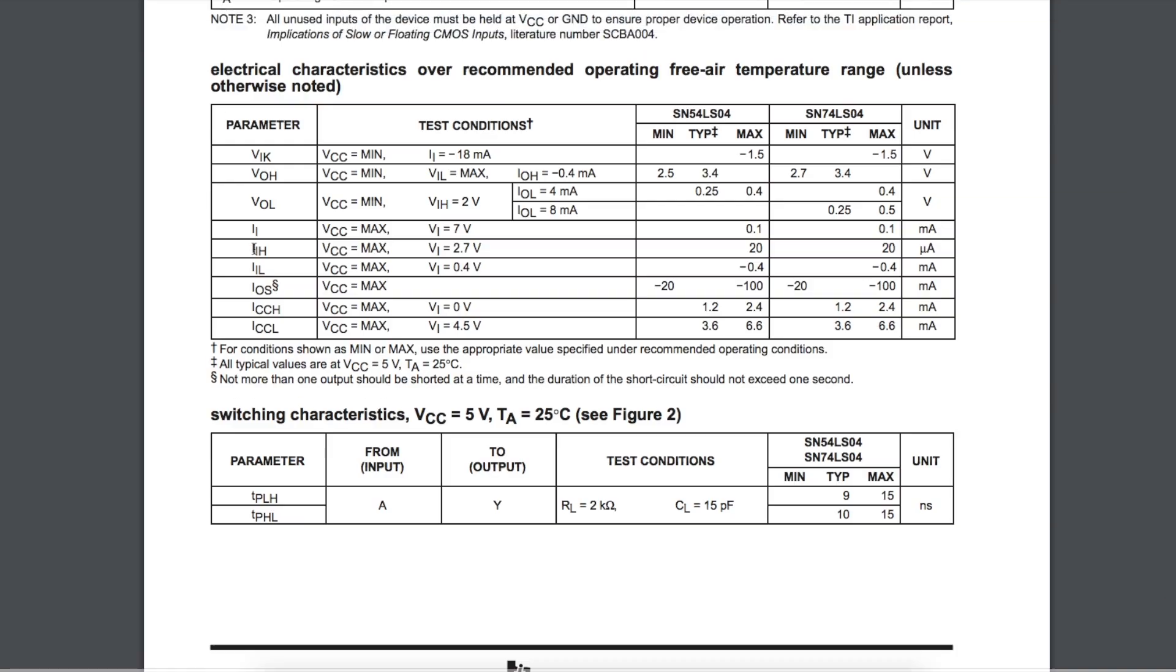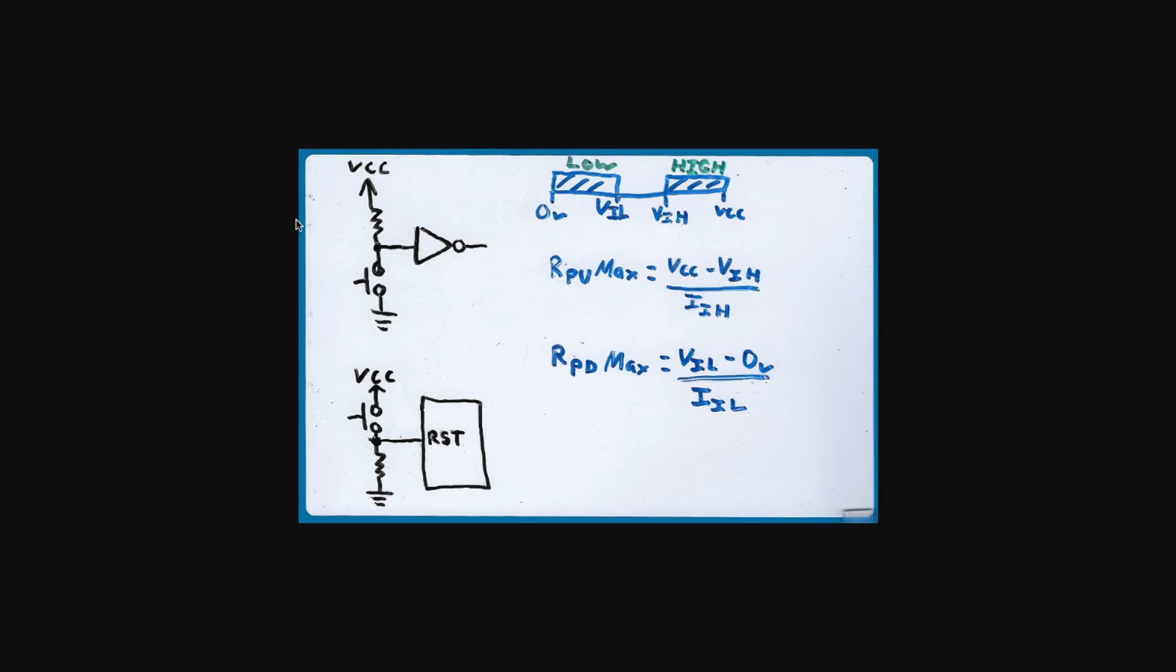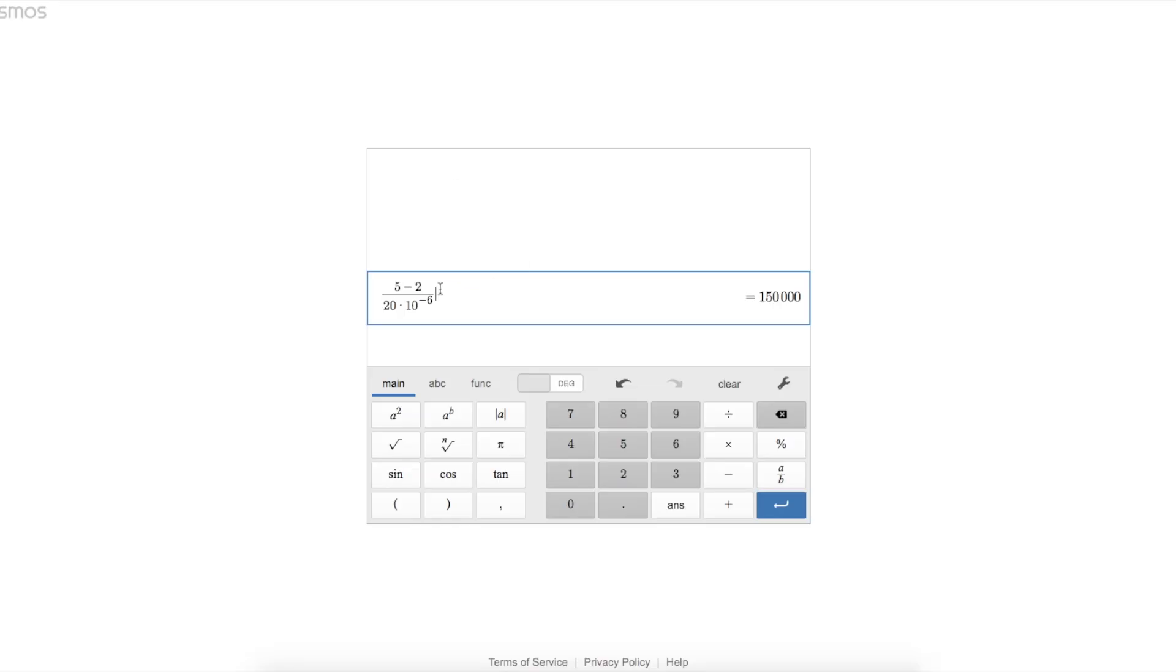Looking at the input current for a logic high presented at the input, we will assume we're not trying to overdrive the input at 7 volts. So a typical input, the input current will be maximum 20 microamps. So the maximum resistor for a pull-up on a 74LS would be 5 volts minus 2 volts for a logic high divided by 20 microamps worst case input current, and that gives us 150k maximum pull-up resistance.